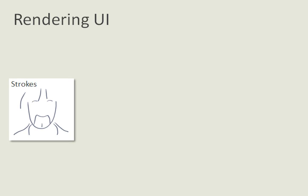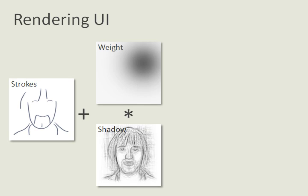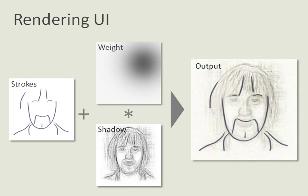As a user draws, the shadow is rendered under the user's drawing with emphasis near the pen location. The shadow is constantly updated to provide guidance throughout the drawing process.